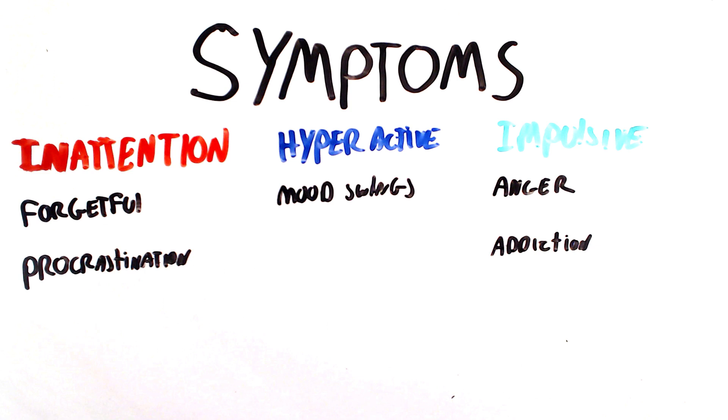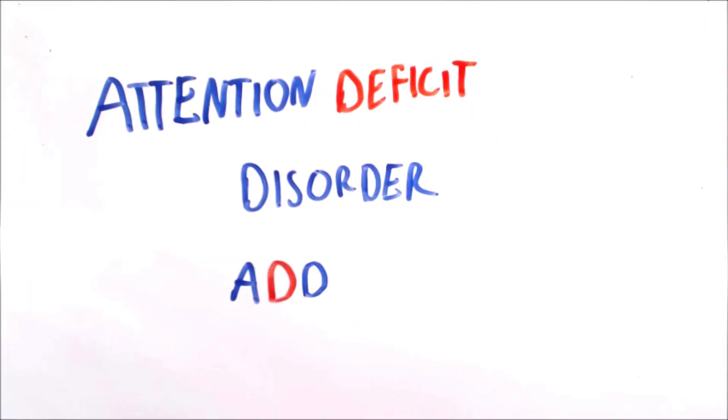People may have a problem with inattentiveness, but not be impulsive or hyperactive. This condition is known as attention deficit disorder, or ADD, and it is a subtype of ADHD.